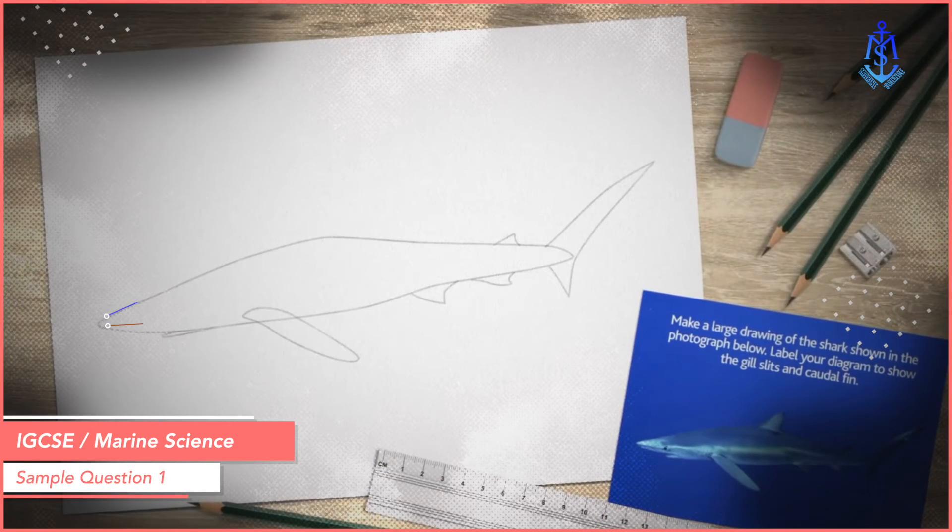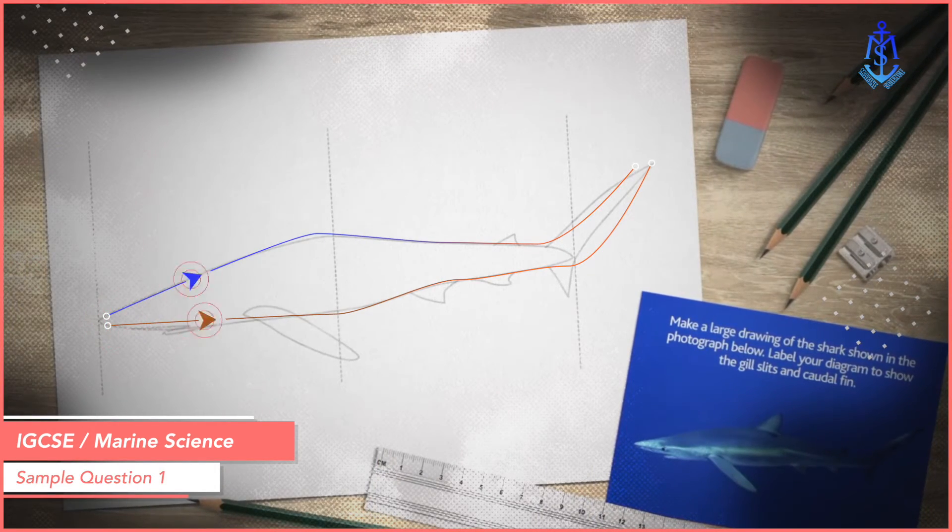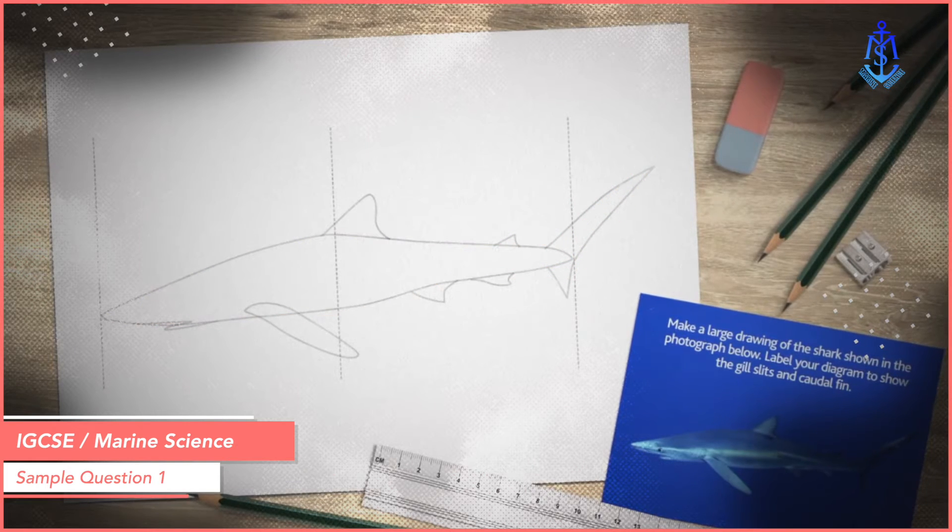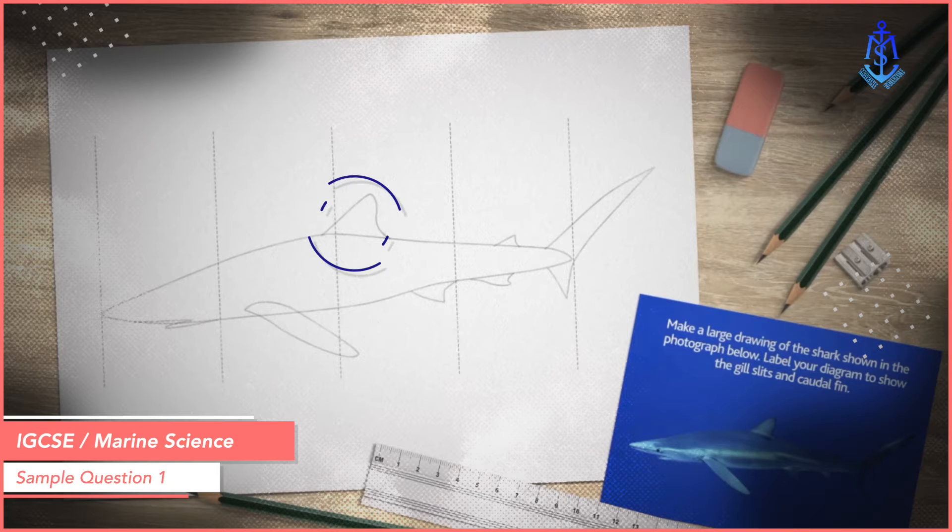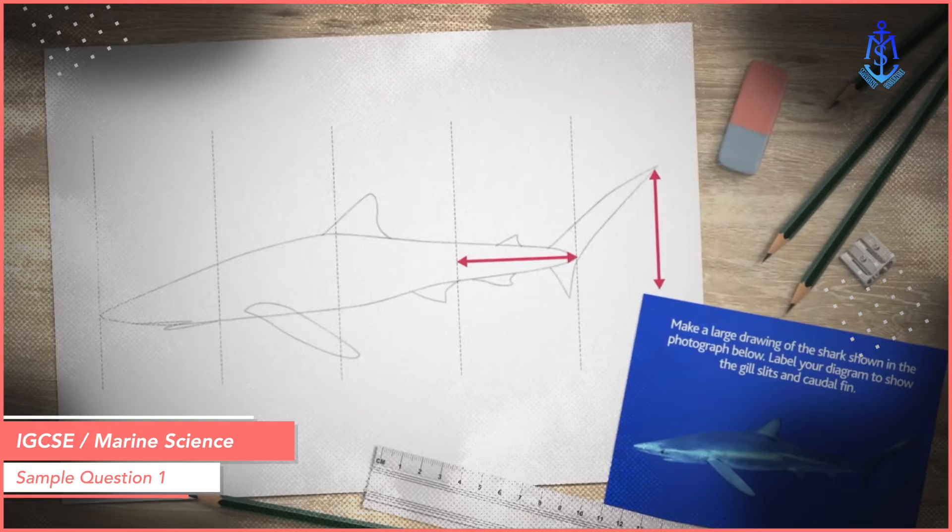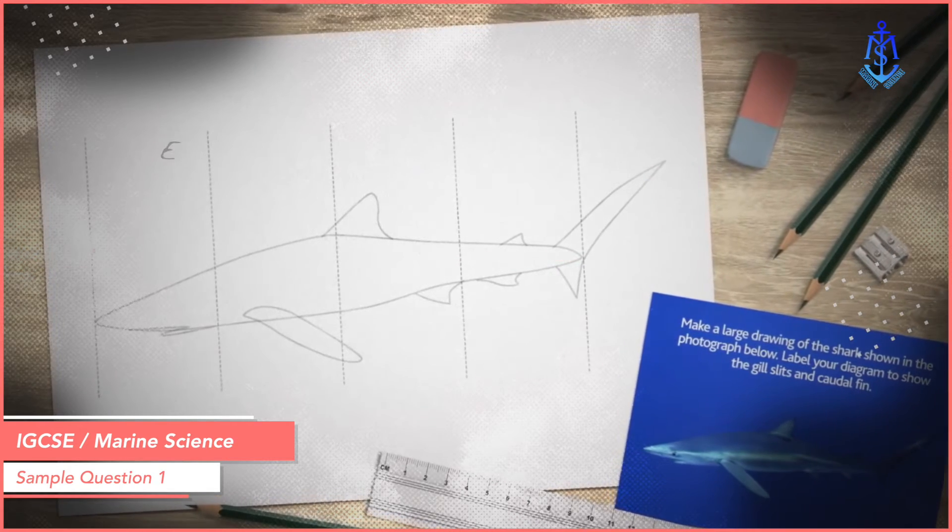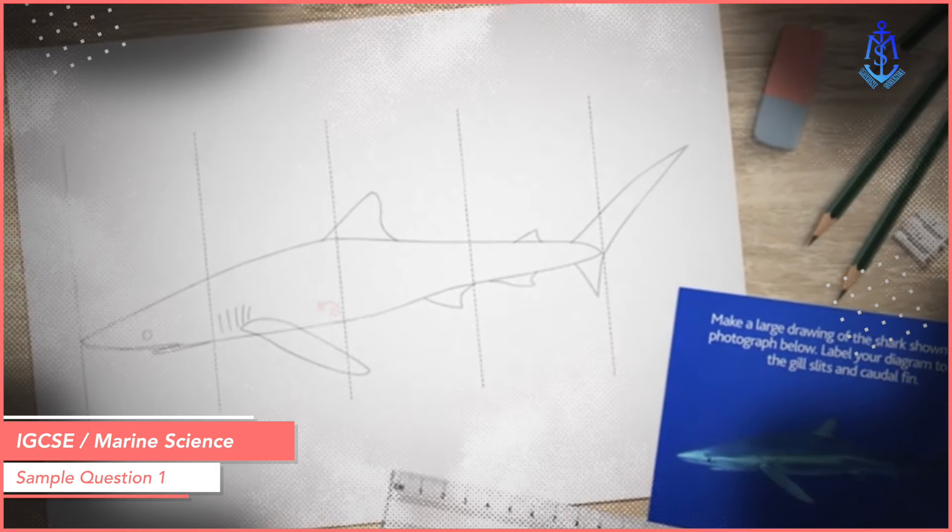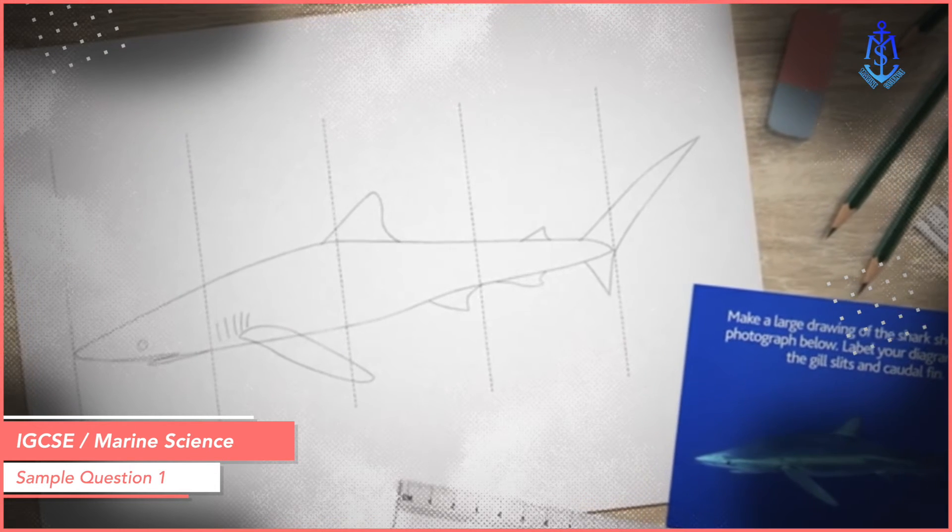Start by lightly drawing the outline of the shark's body shape. Use light lines because you'll erase them later. Then add more details like the fins and mouth. Make sure they're the right size compared to the body and placed correctly. Add extra details like the eye and gill slits. Use proportions to help you place them in the right spots.